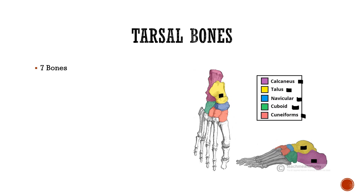This is your calcaneus, this is your navicular. It is called navicular because it is boat-shaped — it is similar in shape to the scaphoid bone, which was also a boat-shaped bone. Then we have the three cuneiforms, and the lateral-most we have the cuboid.